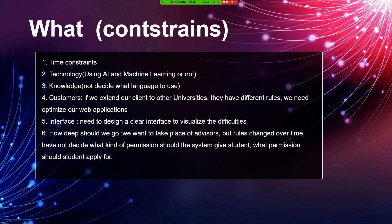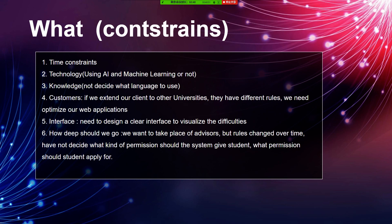Fifth is the interface constraint: we need to design an interface that can visualize course difficulties, which may change over time, and we want to create a chart to visualize them. We also need to decide how deep to go — we want to take the place of an advisor, but user needs change over time. We have not yet decided what kind of permissions the system should give students, though some permissions may require students to apply. That's our introduction — thank you for listening.